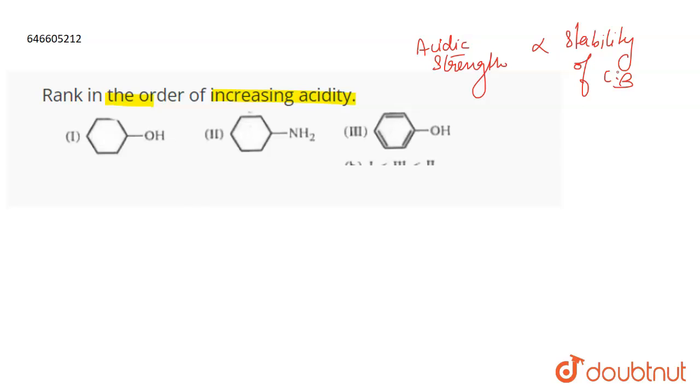Now what will be the conjugate base of cyclohexanol? This will be O negative. When you have to find out the conjugate base, you just have to remove H plus.